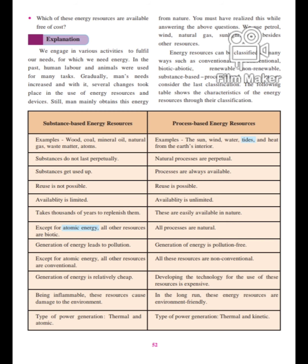The energy resources can be classified in many ways. They are: conventional, non-conventional, biotic, abiotic, renewable, non-renewable, and substance-based and process-based. There is a table given below — let us study it. The following table shows the characteristics of the energy resources, so let us learn about those characteristics.